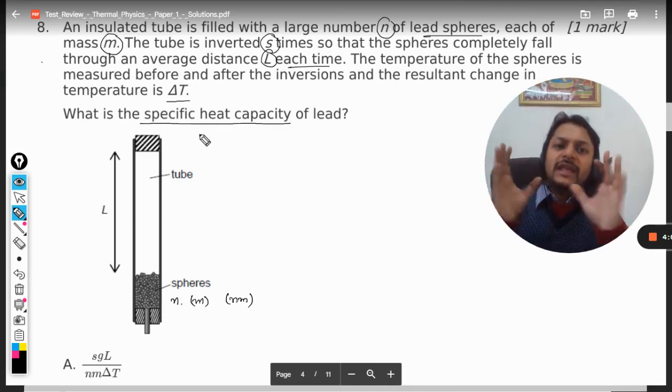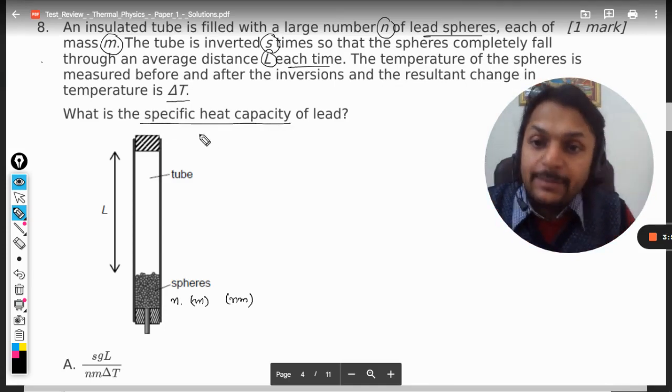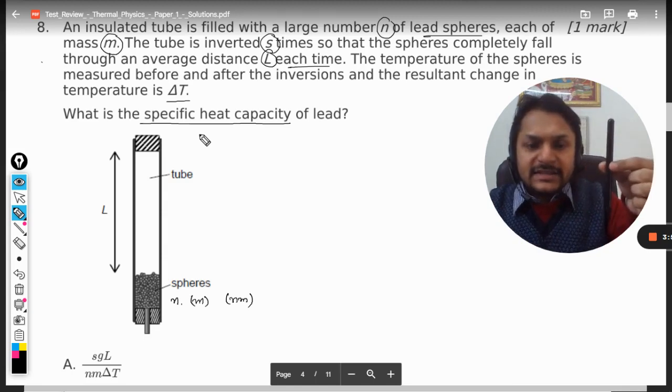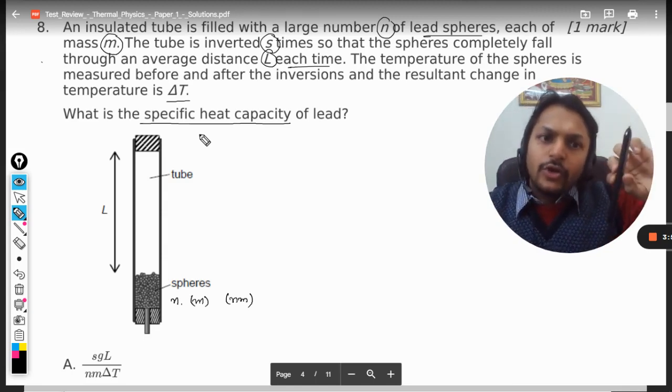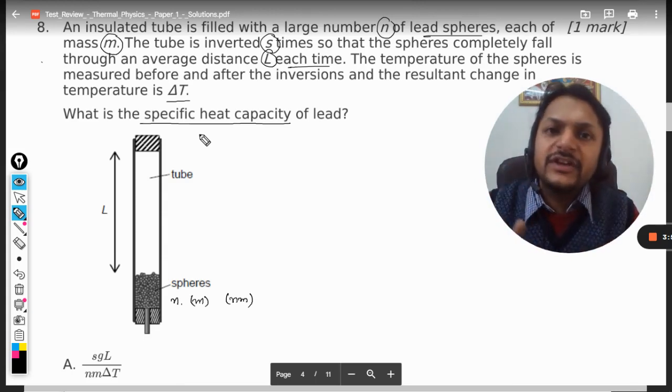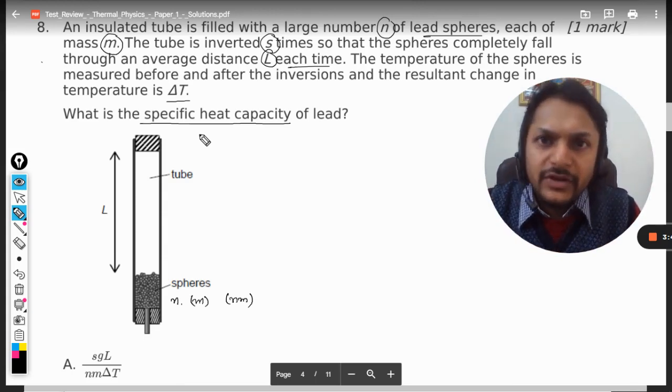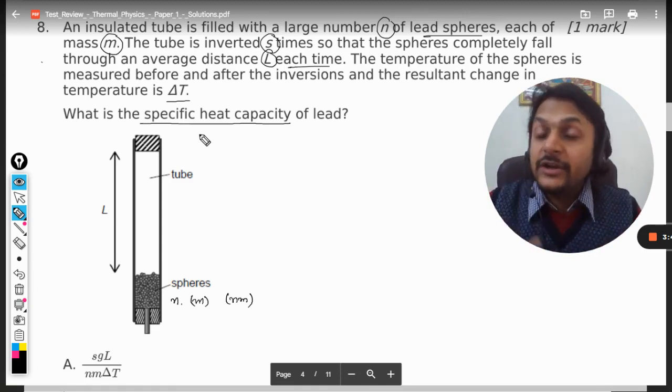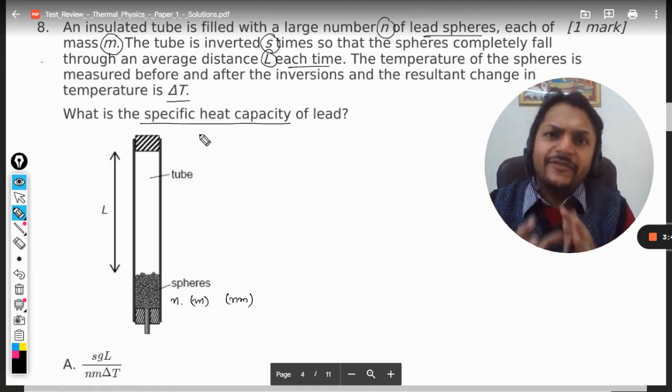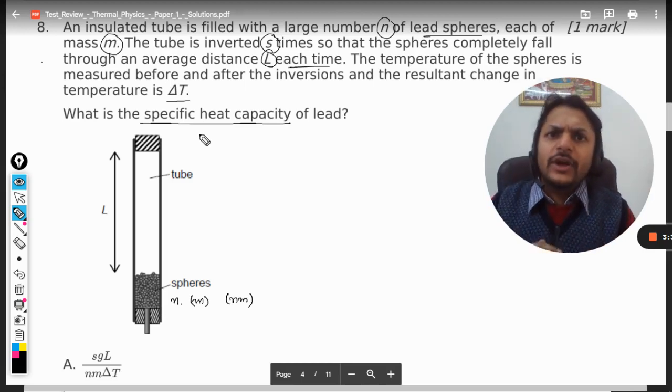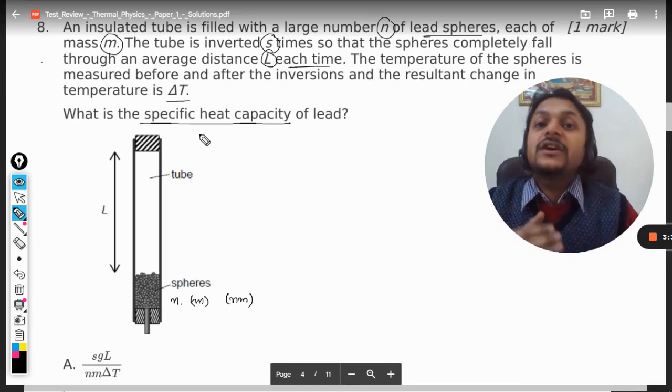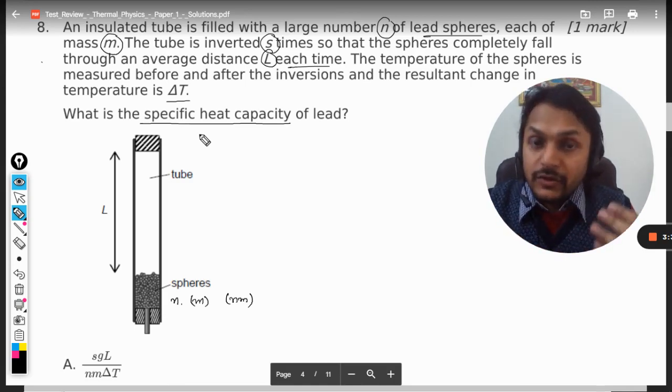Very good. So what's happening is we're inverting this thing s times, and overall these spheres are falling and some kind of energy is getting converted into another kind of energy. We have to identify which two energies are related with each other. Energy cannot be created nor destroyed. Obviously, heat energy has come from some other form.